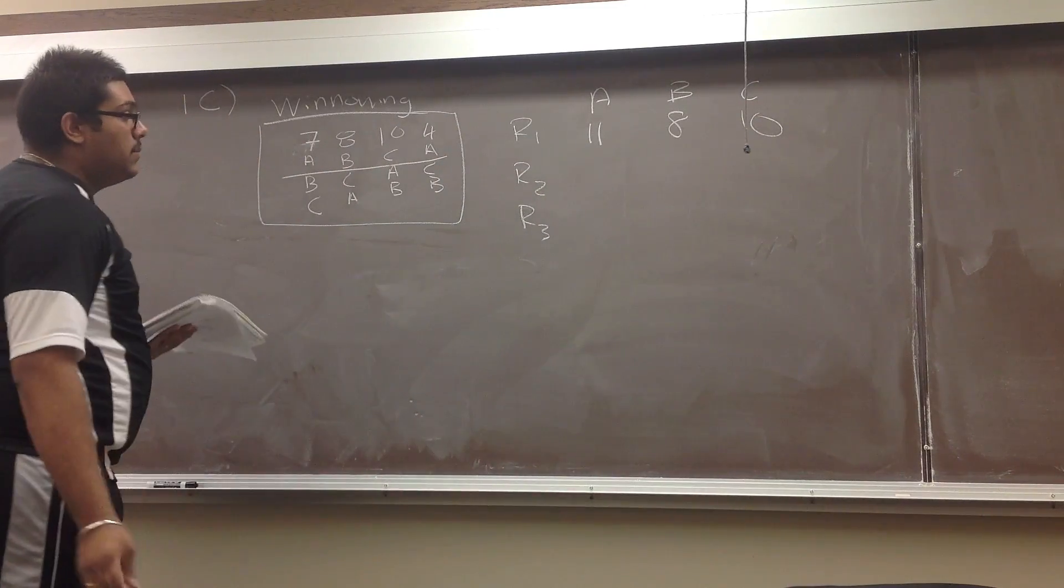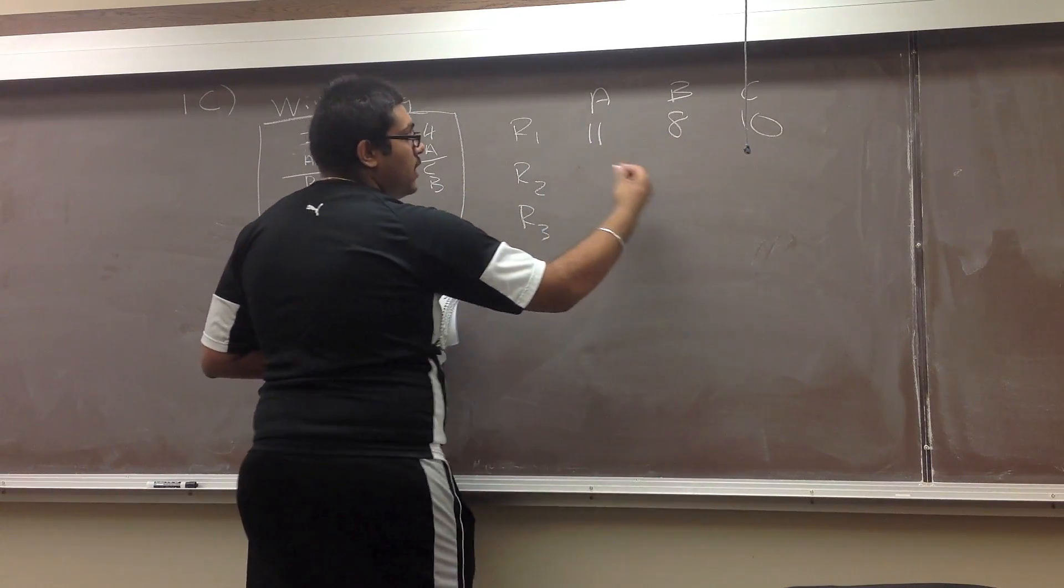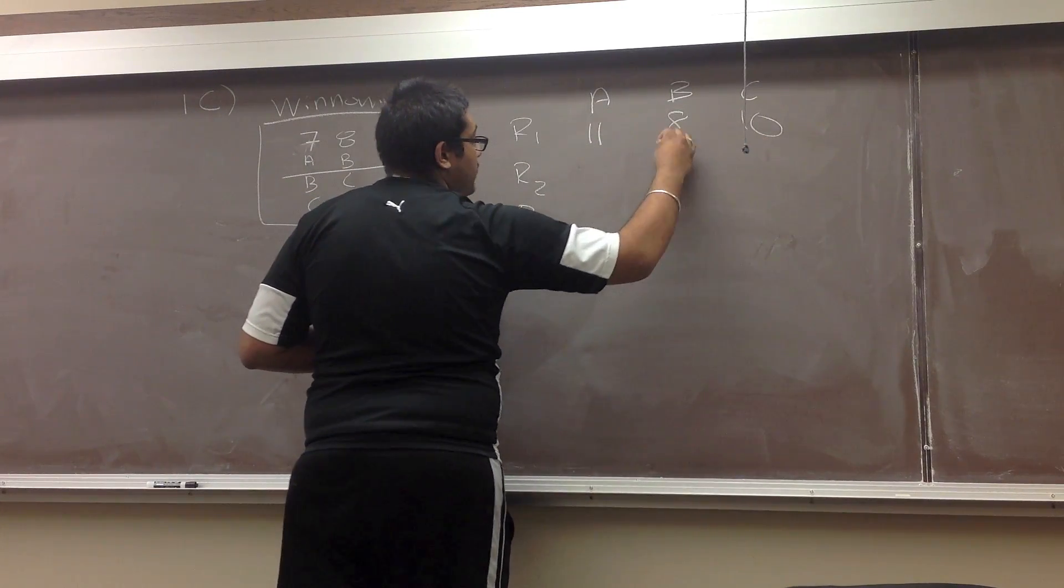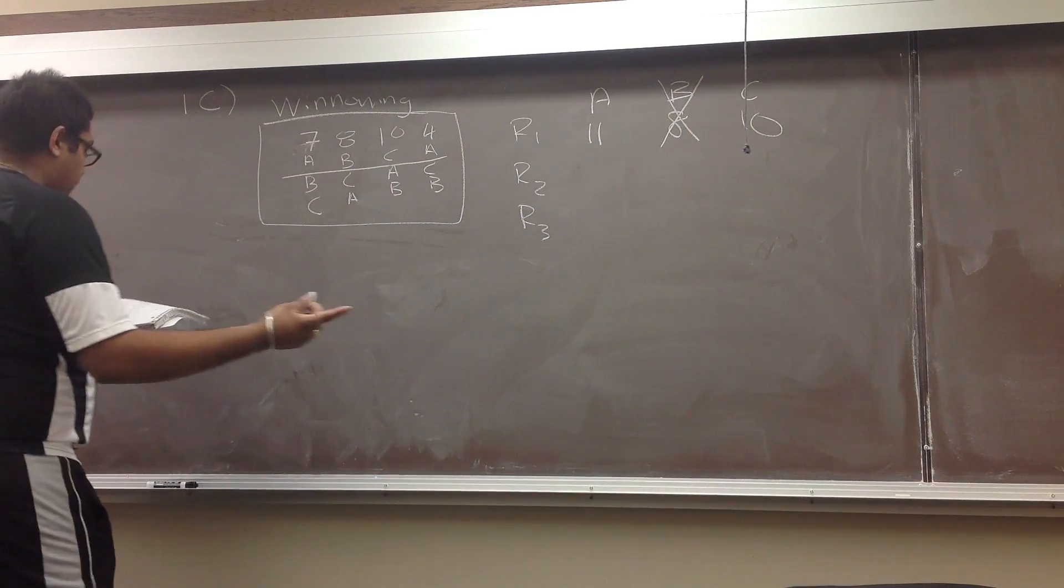And then from this we have to winnow down to whoever has the least amount. So eleven is greater than ten, ten is greater than eight. So eight is removed. So B is removed from this.